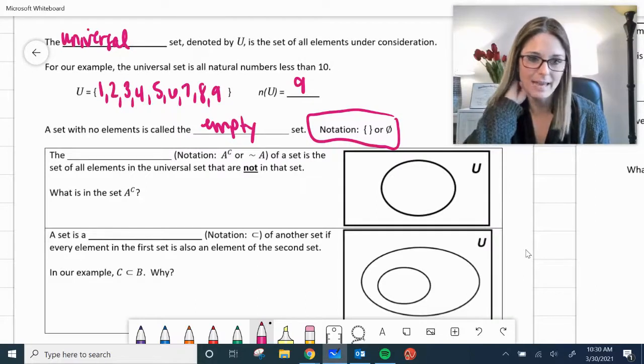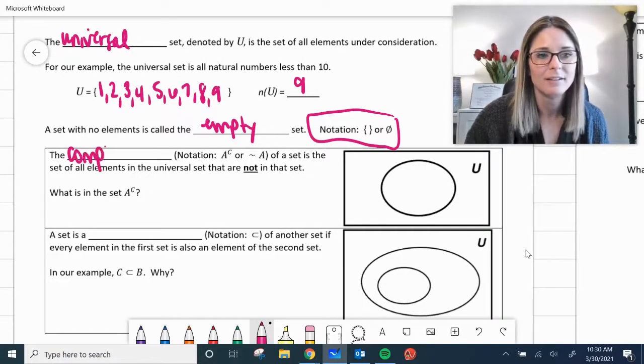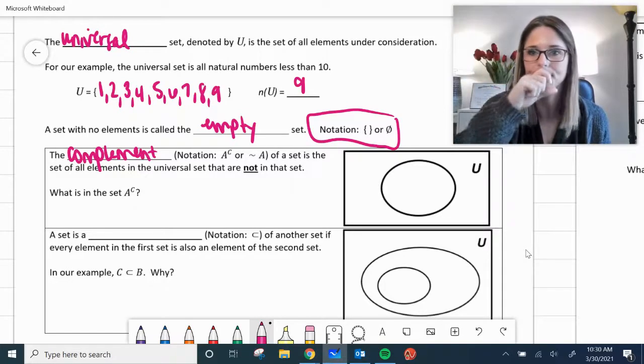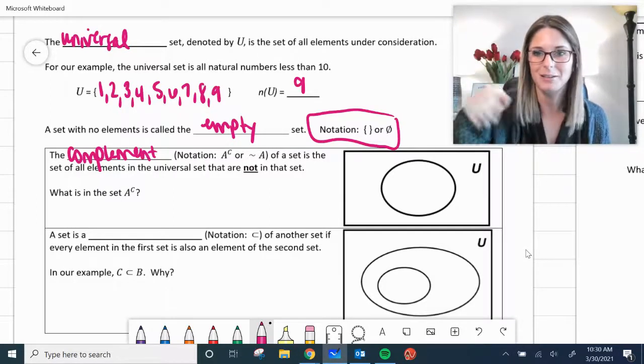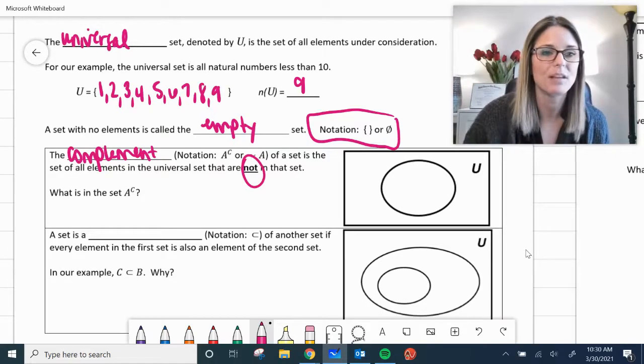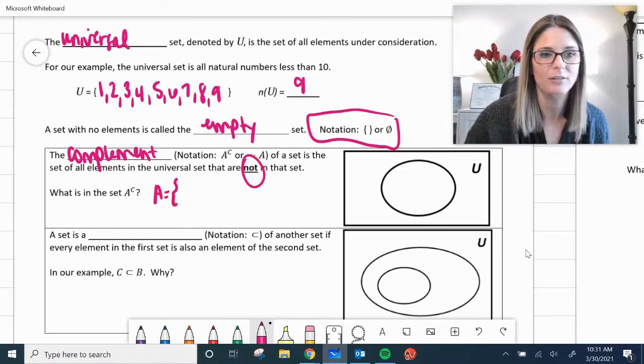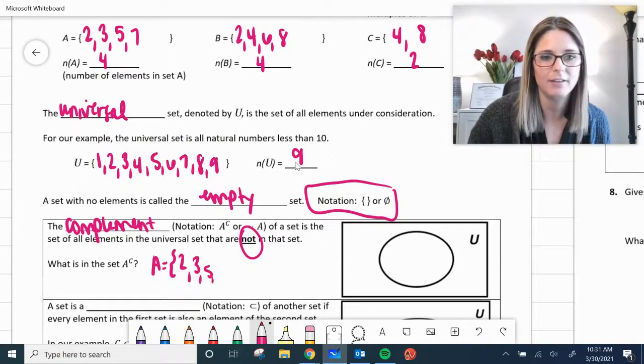The first one in this box here, the blank is a set of all the elements that are not in that set. This is your complement. That notation A of C. So if it was like set A, but with the C, so it would be the complement of A or little tilde A or not. A big theme here is not what's not in. So we're going to use the example, what would be in set complement of A? A complement. Well, A, our original examples up here at the top is what we're referring to. A was 2, 3, 5, and 7.